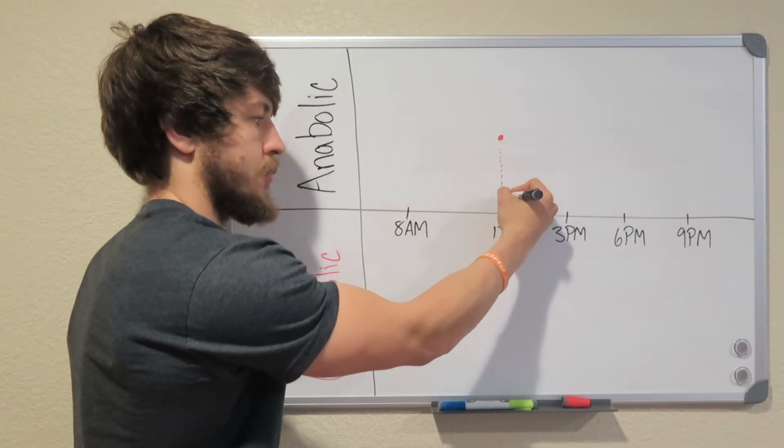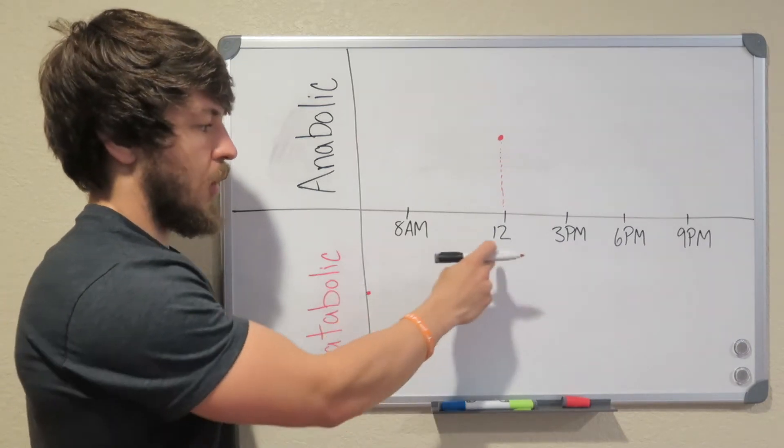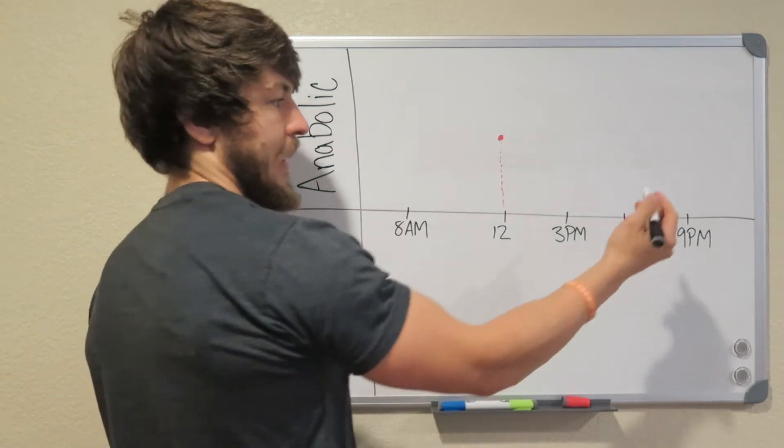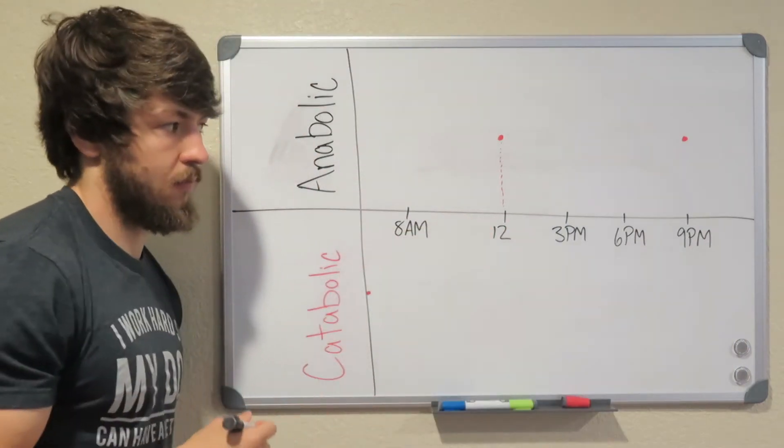Which means we're not normally getting our first meal until about noon. So we wake up catabolic. We don't eat till noon. And then our next meal is usually dinner. So we'll put that at like nine o'clock.